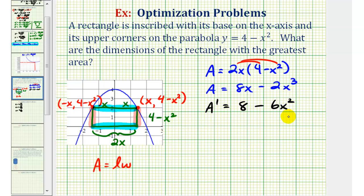Well notice how this is never undefined. So let's go ahead and set it equal to zero and solve for x. Let's go ahead and subtract 8 on both sides. Divide both sides by negative 6. So we have x squared equals, this simplifies to 4 thirds. And now we'll take the square root of both sides to solve for x.